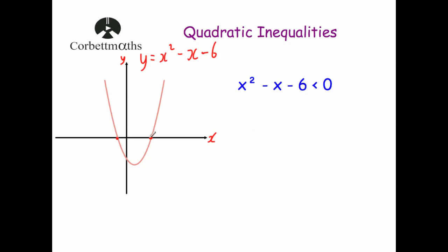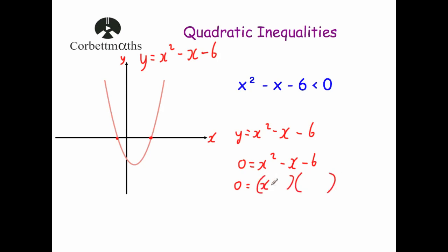To find the two values where our quadratic crosses the x-axis, we take y equals x squared minus x minus 6 and let it equal 0. So 0 equals x squared minus x minus 6. We factorize and solve: 0 equals (x minus 3)(x plus 2). Checking: x squared plus 2x minus 3x is minus x, and minus 3 times 2 is minus 6. That means our solutions are x equals 3 or x equals minus 2. So this point is minus 2 and this point is 3.